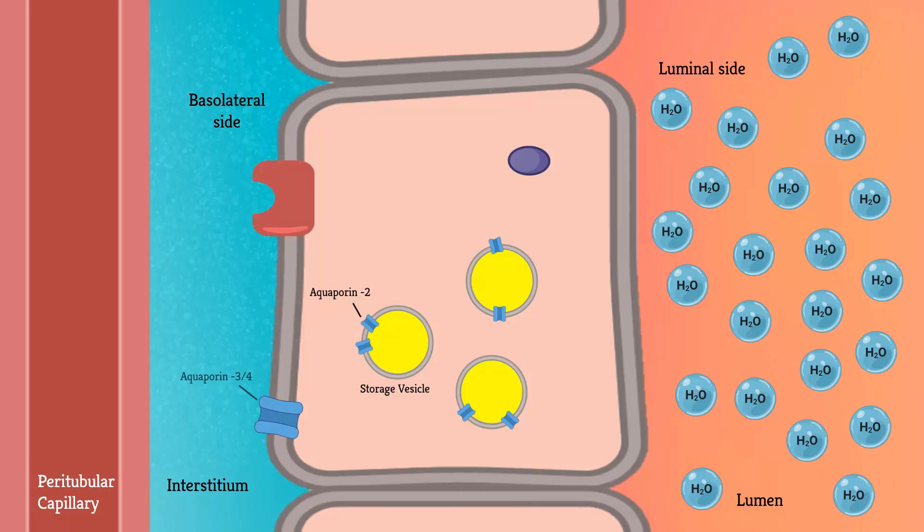When the body needs to conserve water in circumstances such as dehydration, ADH is secreted into the circulation. ADH binds to its specific V2 receptor in the basolateral membrane of the collecting duct epithelial cells. This in turn increases the formation of second messenger cyclic AMP. Cyclic AMP activates protein kinase A by phosphorylation.